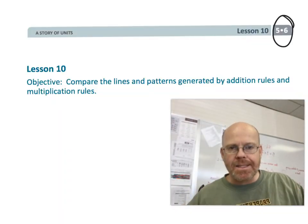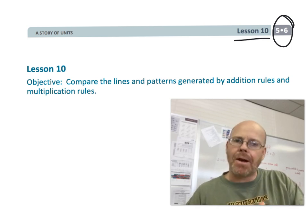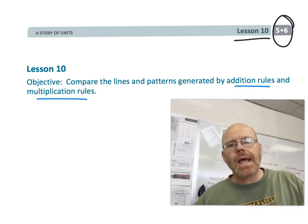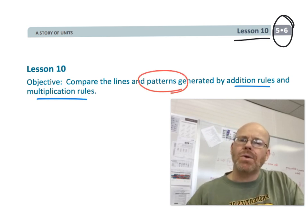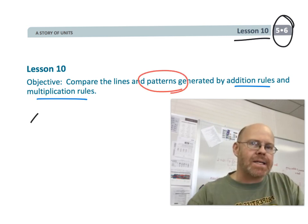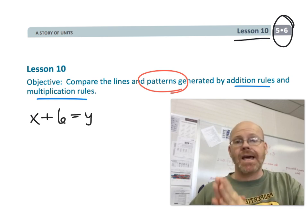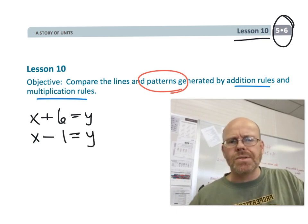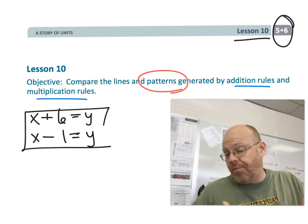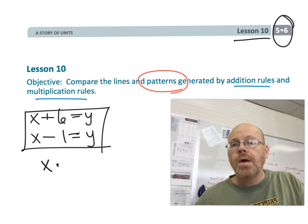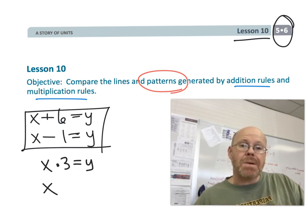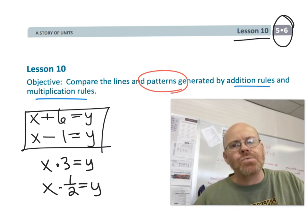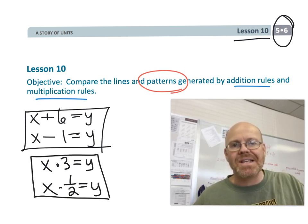This is fifth grade module 6 lesson 10. In this lesson we're going to continue comparing lines generated by addition and multiplication rules. We'll help students identify patterns — what happens when you add 6 versus subtract 1 from the x value, how do those lines compare? And with multiplication, multiplying by 3 versus multiplying by one-half — how do those lines compare? This is the nature of mathematics: the study of patterns. Let's have fun and get started.